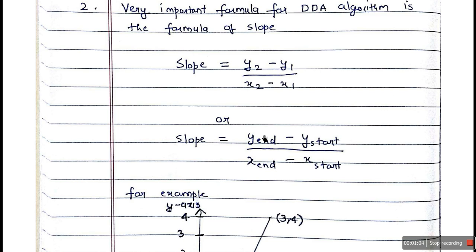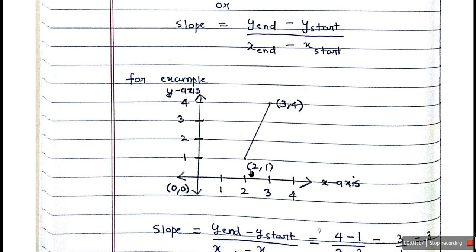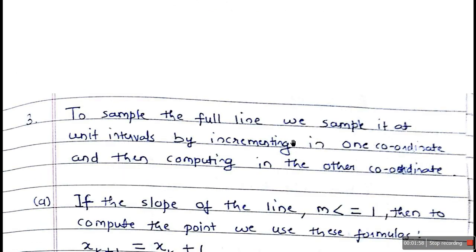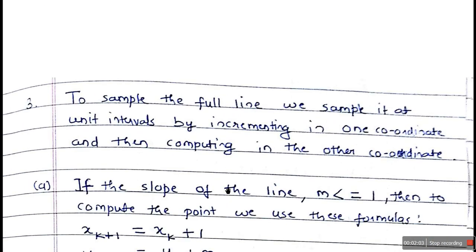This means you subtract the starting Y coordinate from the ending Y coordinate, divided by the ending X coordinate minus the starting X coordinate. For example, if the starting point is (2, 1) and the ending point is (3, 4), the slope is: Y-end minus Y-start = 4 minus 1 = 3, divided by X-end minus X-start = 3 minus 2 = 1. So the slope M equals 3.